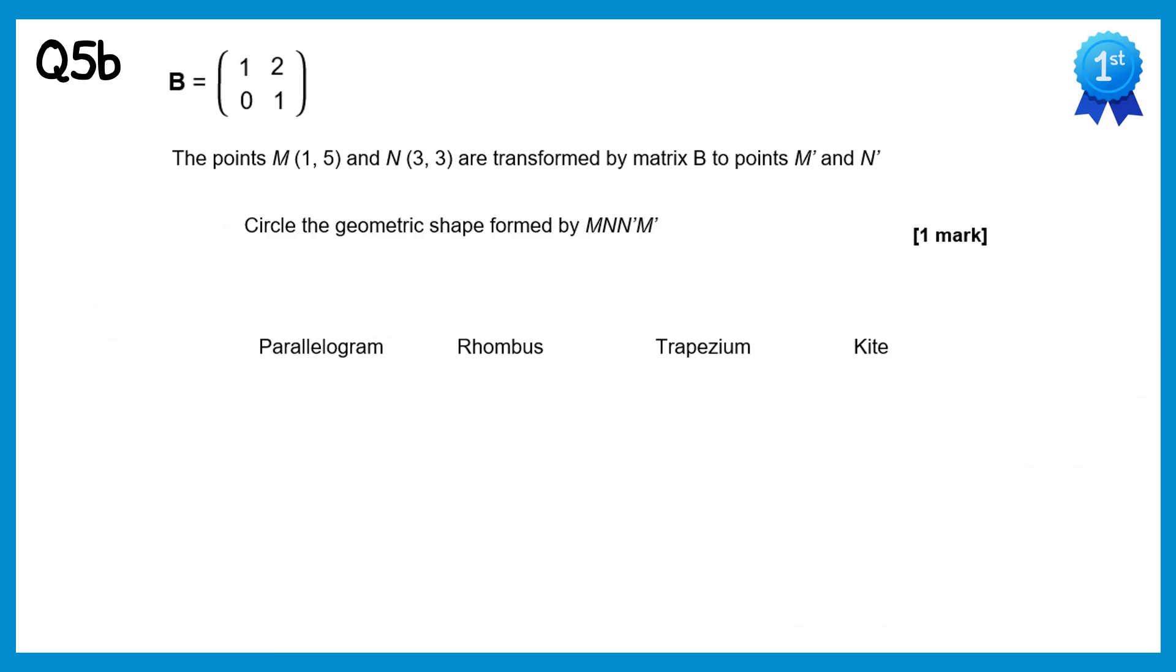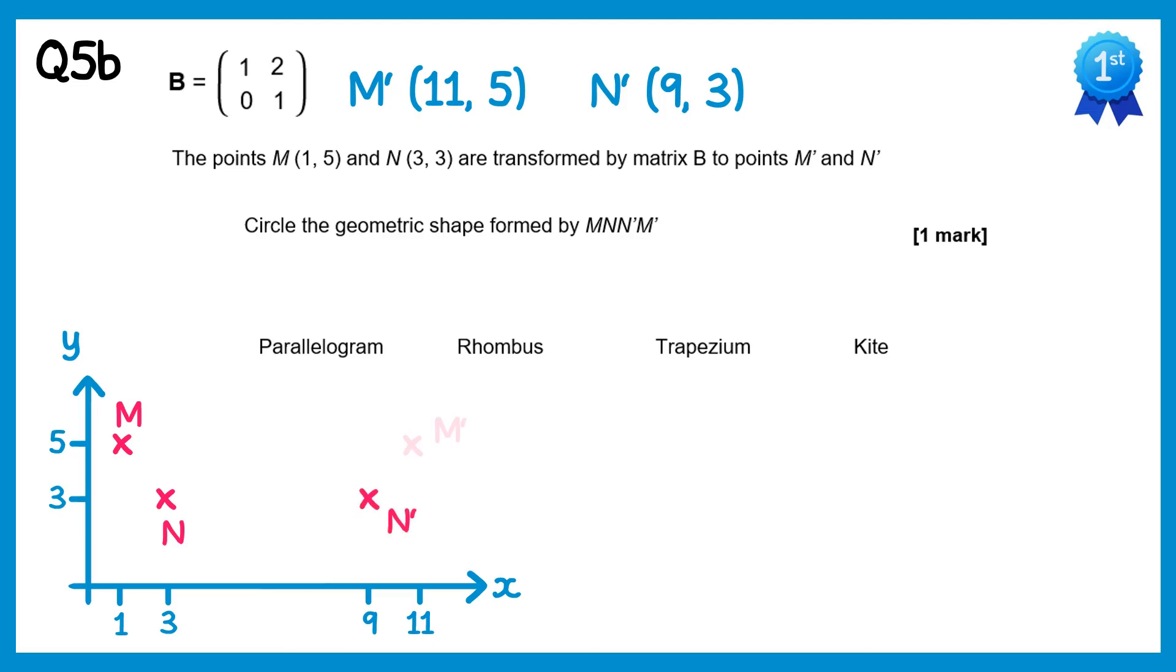In the previous part of this question, we found the points M dash and N dash. The easiest way to do this is draw a quick sketch. So we have M which is at (1,5), N which is at (3,3), N dash which is at (9,3), and M dash which is at (11,5).